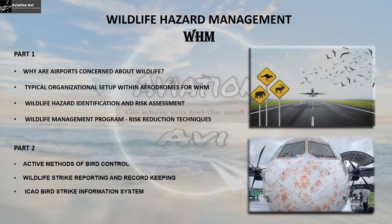This video on wildlife hazard management will be divided into two parts. The first part will help you understand why airports are concerned about wildlife, what a typical organizational setup within airports looks like for wildlife hazard management, and how wildlife hazards are identified and risk assessment is done. Further, we will move on to understand wildlife management programs and risk reduction techniques. In part two, we will cover active methods of bird control, wildlife strike reporting and record keeping, and the ICAO bird strike information system.